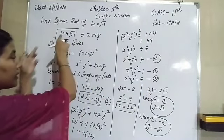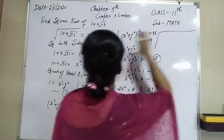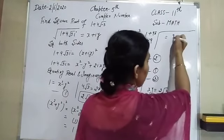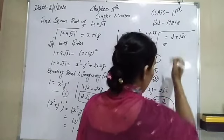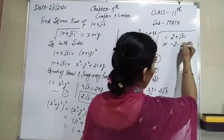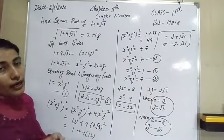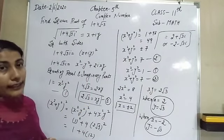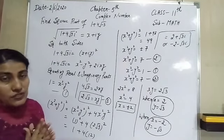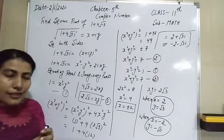So the square root of 1 plus 4√3·i equals 2 plus √3·i, or minus 2 minus √3·i. Hope all of you are now clear about how to find the square root of a complex number. Thank you so much everyone. For tomorrow we will discuss the next topic: the cube root of unity.